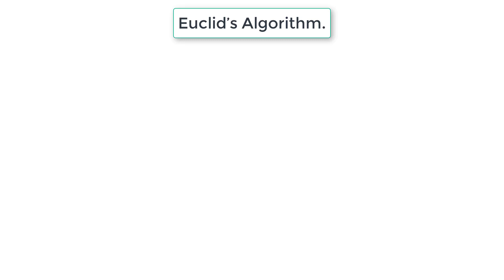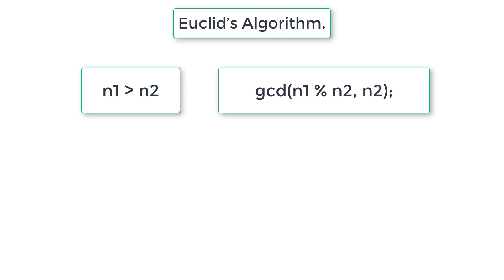If the user enters two numbers N1 and N2, according to Euclid's algorithm, if N1 is greater than N2, reduce the value of N1 by writing N1 modulo N2 and replace it with the value of N1. Assume we have a function called GCD — if we pass two numbers, it returns the GCD. So passing N1 modulo N2 and N2 is equivalent to passing N1 and N2.